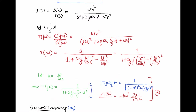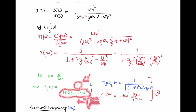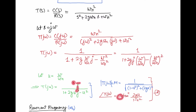The magnitude of this second order transfer function is given by 1 over the square root of (1 - u²)² plus (2ζu)², where (1 - u²) is the real part and 2ζu is the imaginary part. The phase is negative tangent inverse of the imaginary part 2ζu divided by the real part (1 - u²), with a negative sign because it is the numerator phase minus the denominator phase.